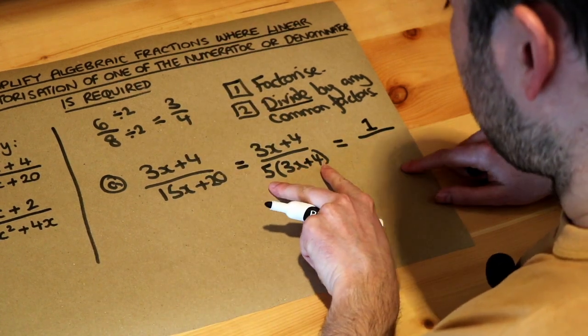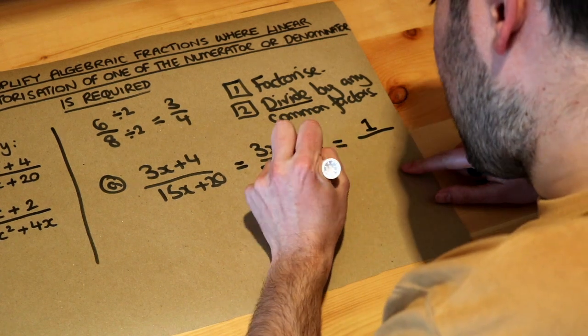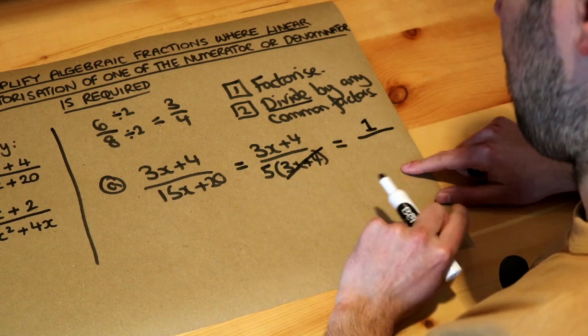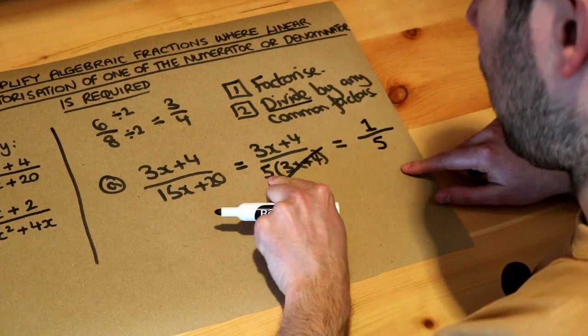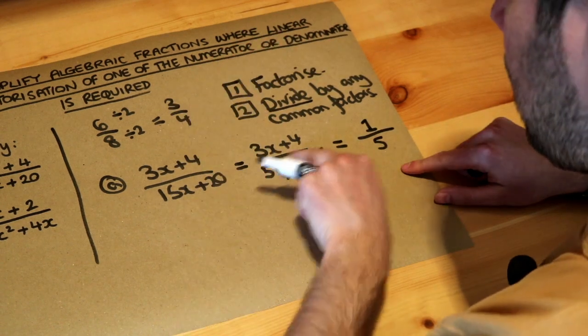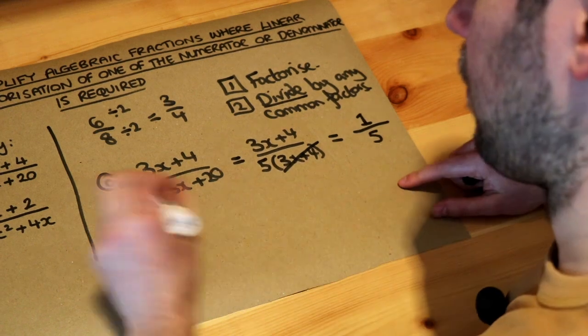And now if we divide the bottom of this fraction, the denominator, by 3x plus 4, that just cancels this 3x plus 4 here. So I like to put a cross through it and we're just left with that 5. Because if you have 5 times 3x plus 4 but then divide by 3x plus 4, that gets rid of it, you're just left with the 5. So we're left with a fifth. That's the final answer.